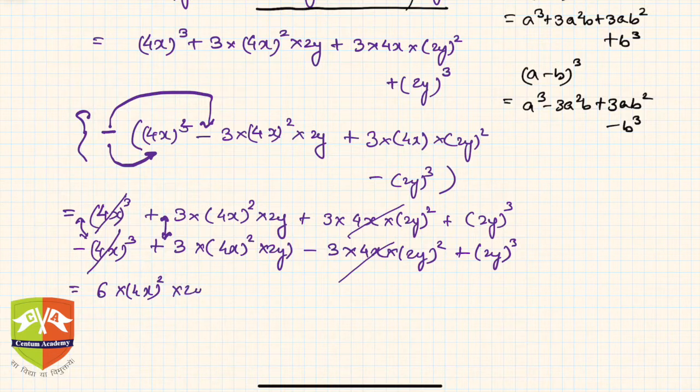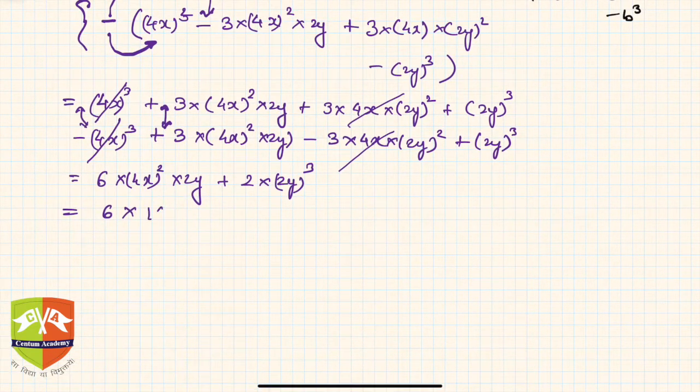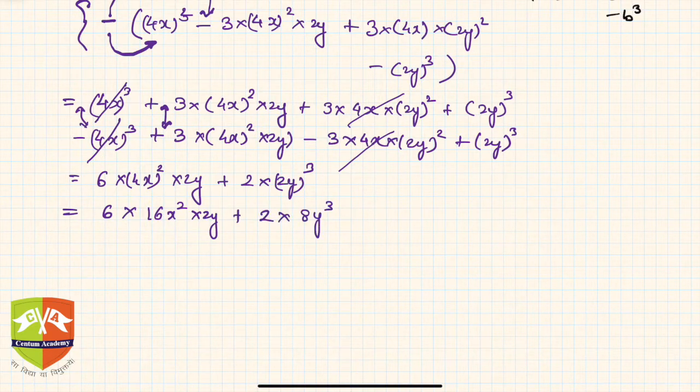And this is nothing but 2 times (2y)³. Hence if you simplify it further you will get 6 into 4² is 16x² into 2y plus 2 into 8y³.